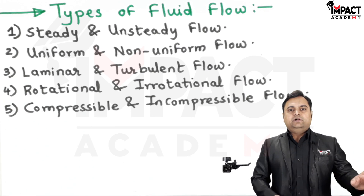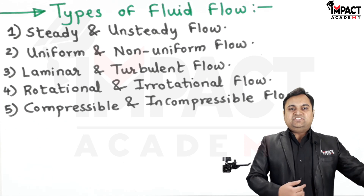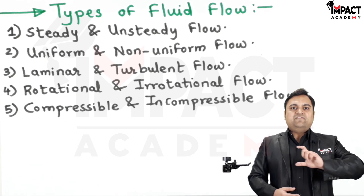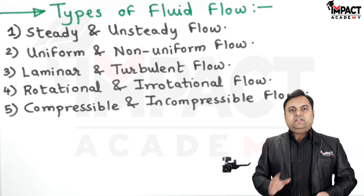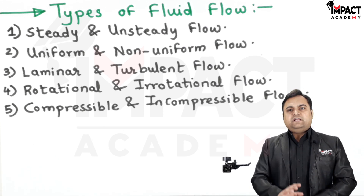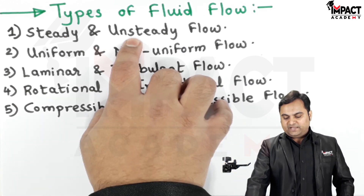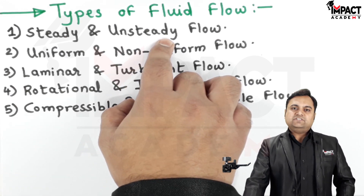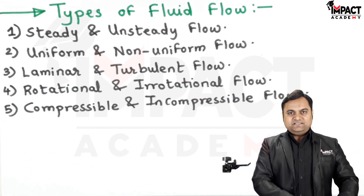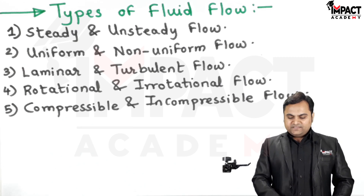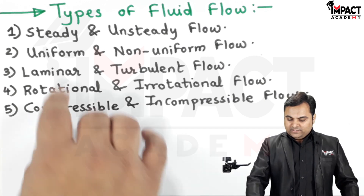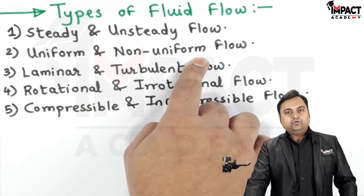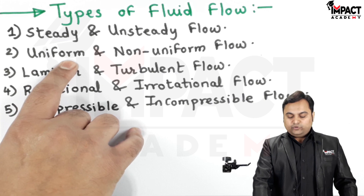If the properties of the fluid while flowing — like velocity or pressure — go on changing, such as in a tapered pipe where velocity and pressure continuously change with respect to time, then it would be called unsteady flow. So we can say steady flow is constant flow, whereas unsteady flow changes with respect to time.